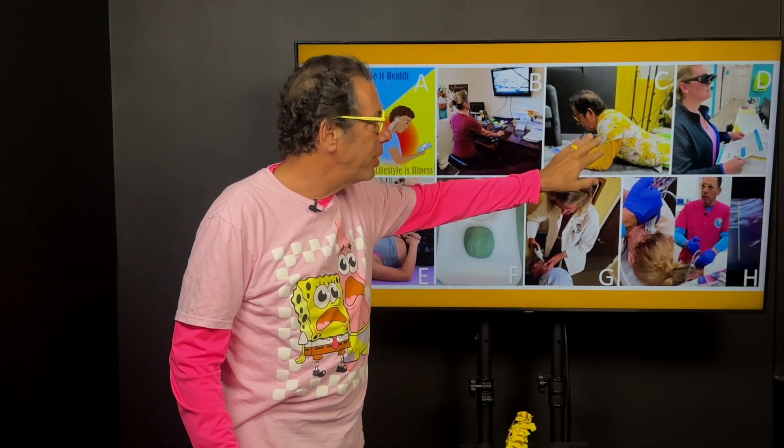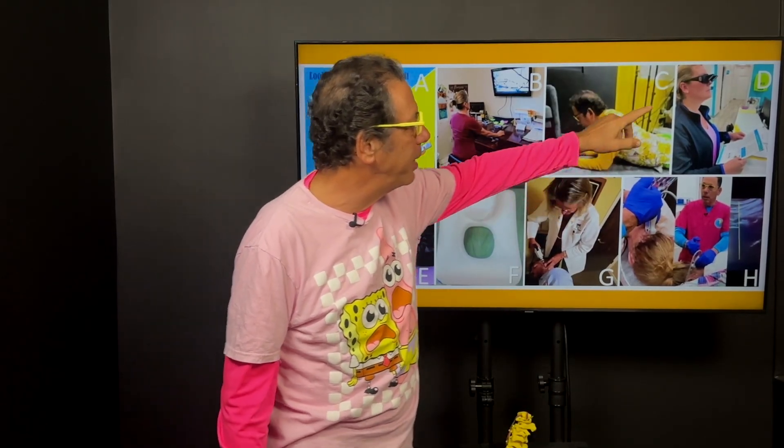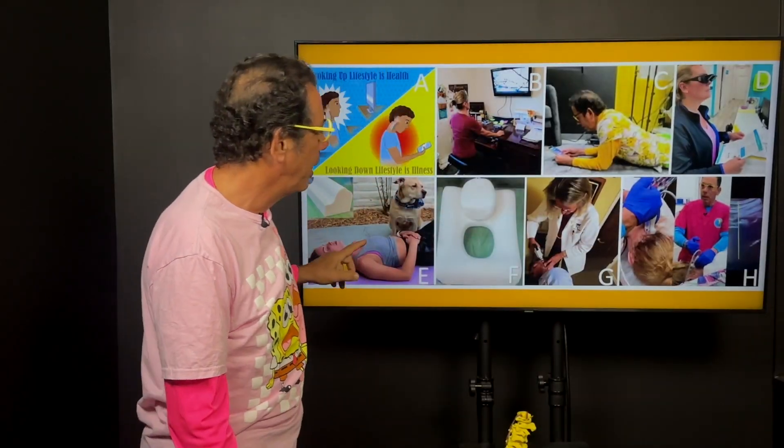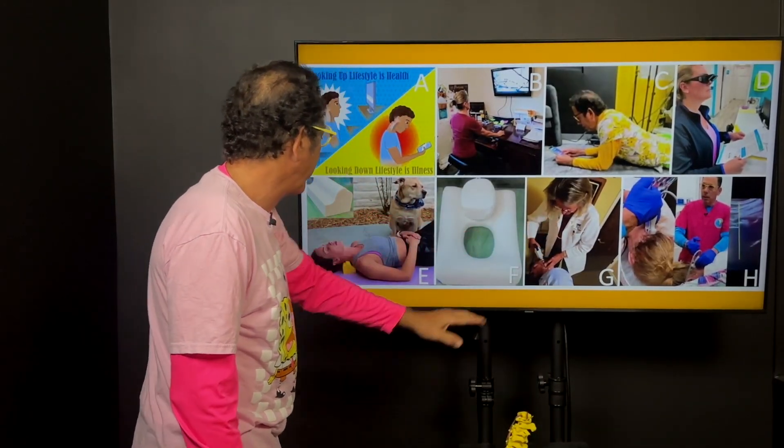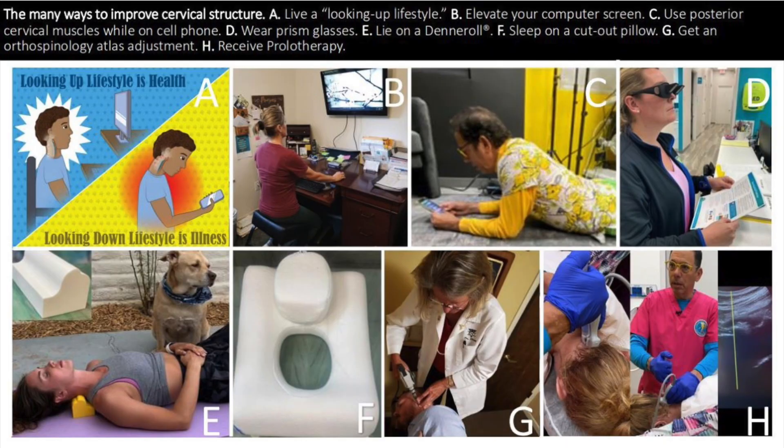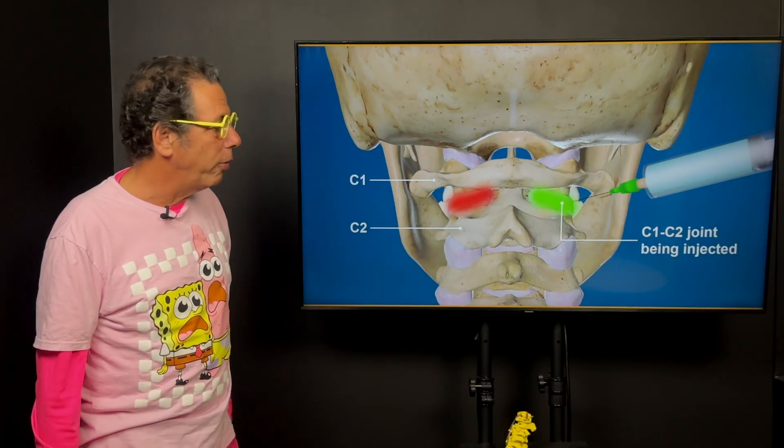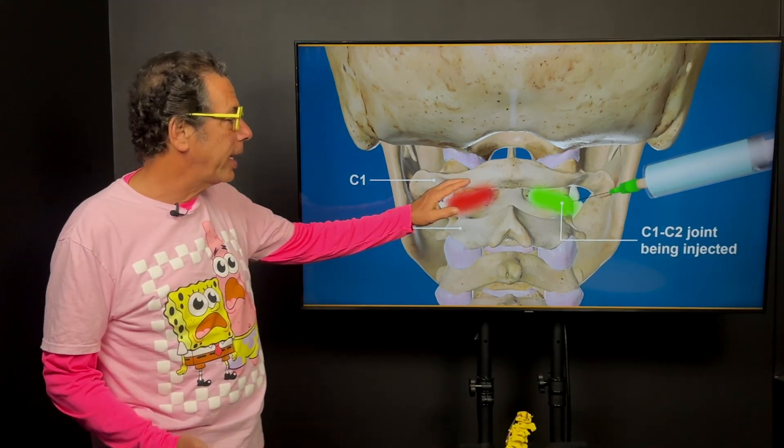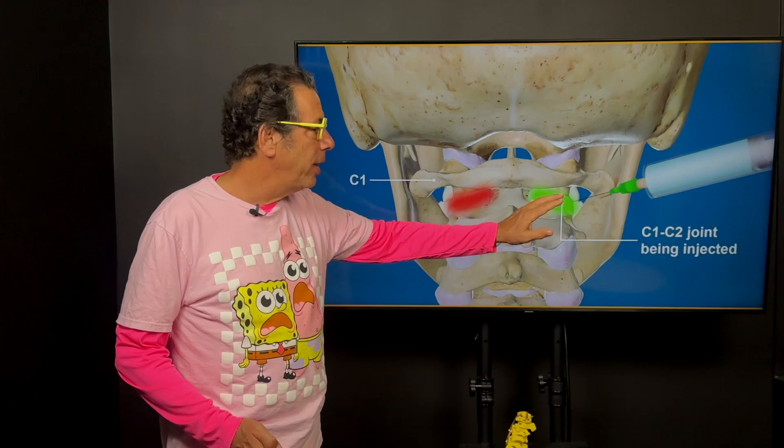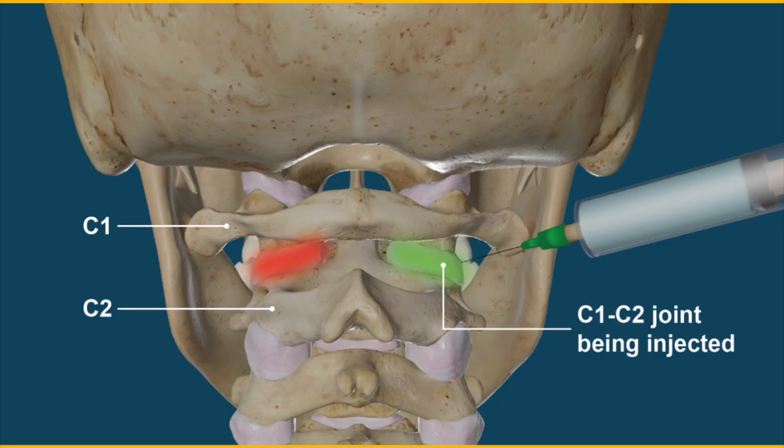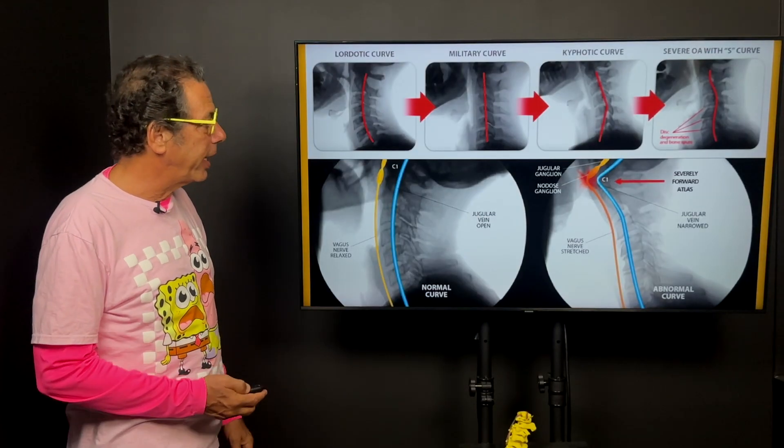And then some of the recommendations are going to be stop doing this. You know if you're going to look down at your cell phone have your neck extended, get prism glasses and then sometimes you need chiropractic adjustments, laying on a dental roll, raise your computer height and of course sometimes you need prolotherapy. You do prolotherapy in the injured ligaments. The most common ligaments that cause eye problems are ligamentous C1-C2 facet joint instability.